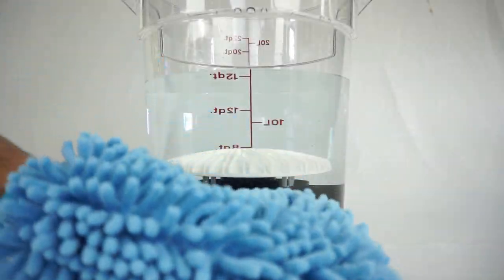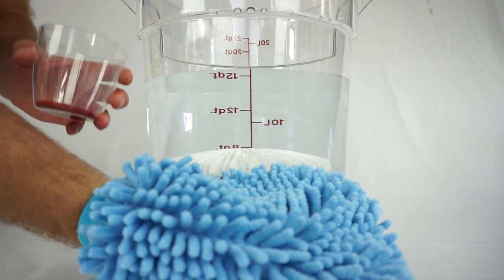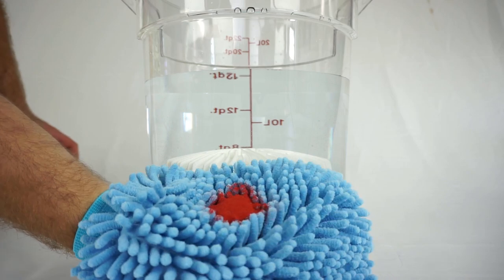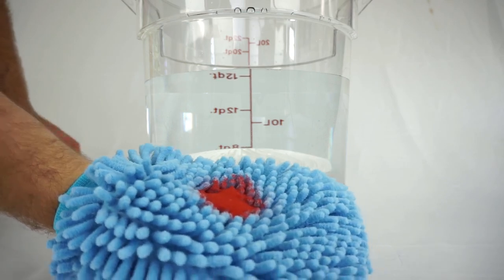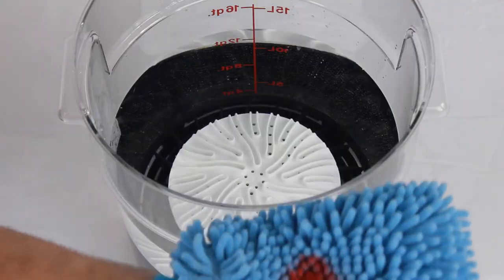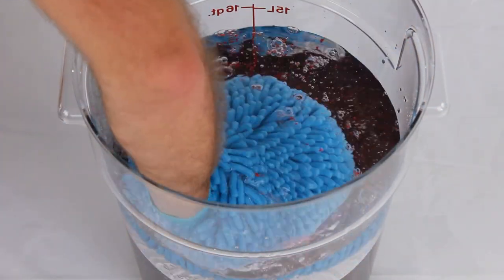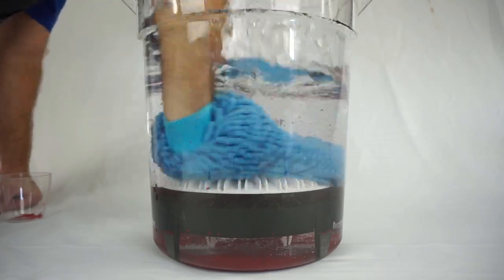The Scrub and Pump attachment works together with the Dirt Lock bucket filter to help remove nearly all traces of dirt particles that may damage your vehicle's finish. This allows you to agitate your wash mitt or other tools on the Scrub and Pump attachment and simply push down to flush out any debris.